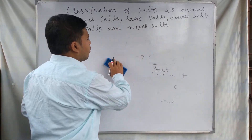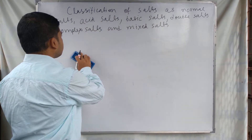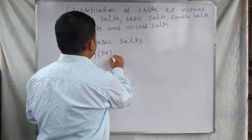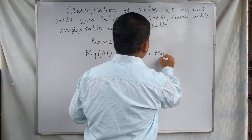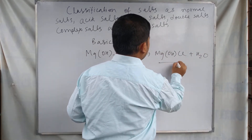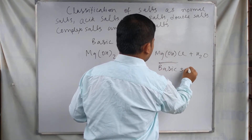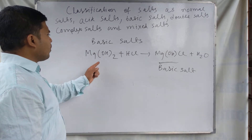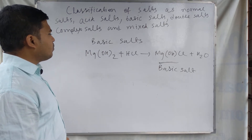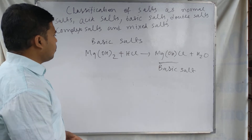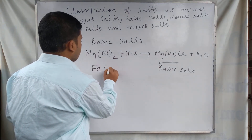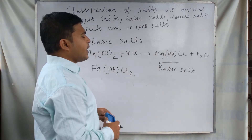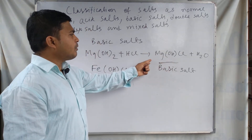Next we discuss basic salts. For example, magnesium hydroxide and HCl react to form MgOHCl and water. This is called a basic salt. Basic salts are formed by the partial replacement of the OH⁻ ion of the base — only one OH⁻ ion of the base is replaced. Another example of basic salts is Fe(OH)Cl2. The basic salt contains a replaceable OH⁻ ion in its molecule.